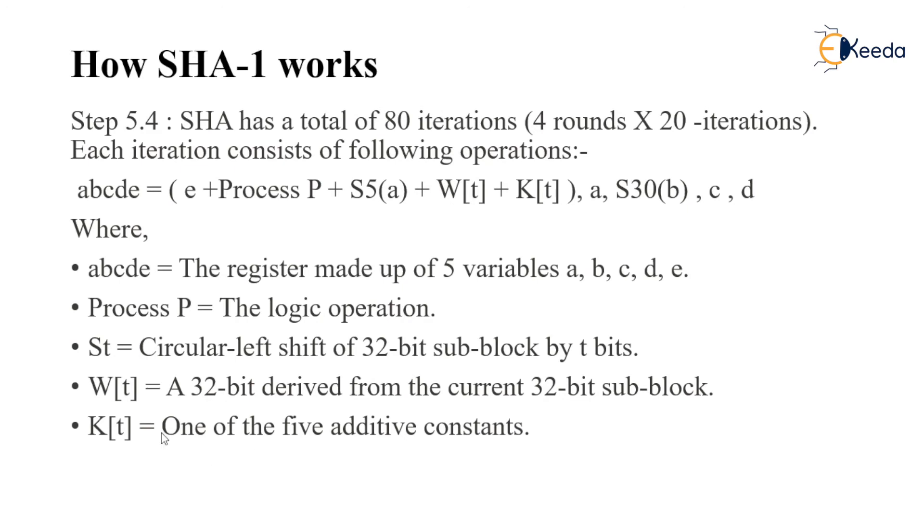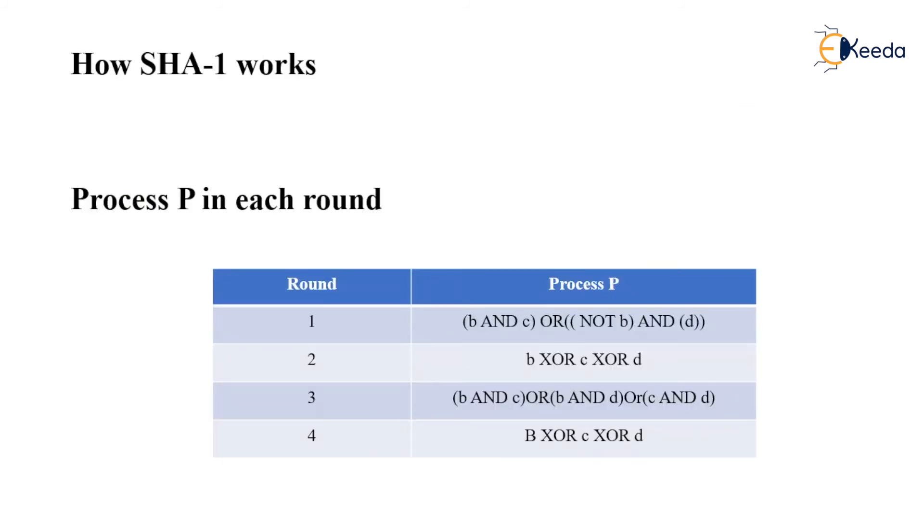SHA-1 works and the process P in each round takes place in this manner. For round 1 this functionality, for round 2 this functionality, for round 3 this, and for round 4 this functionality.